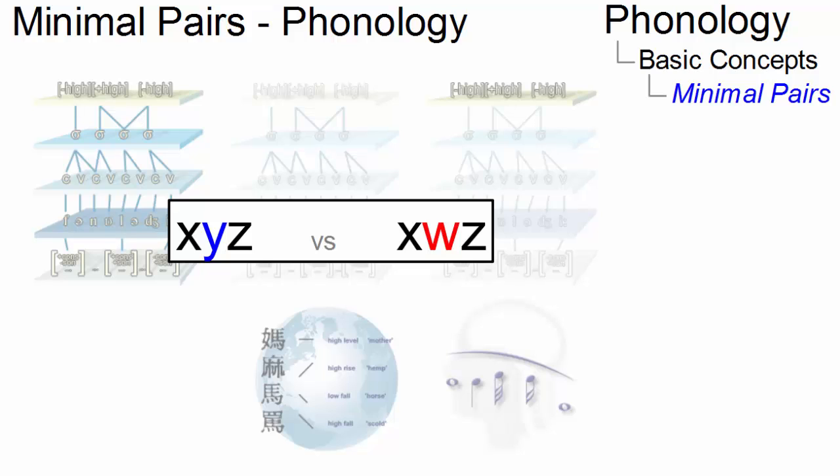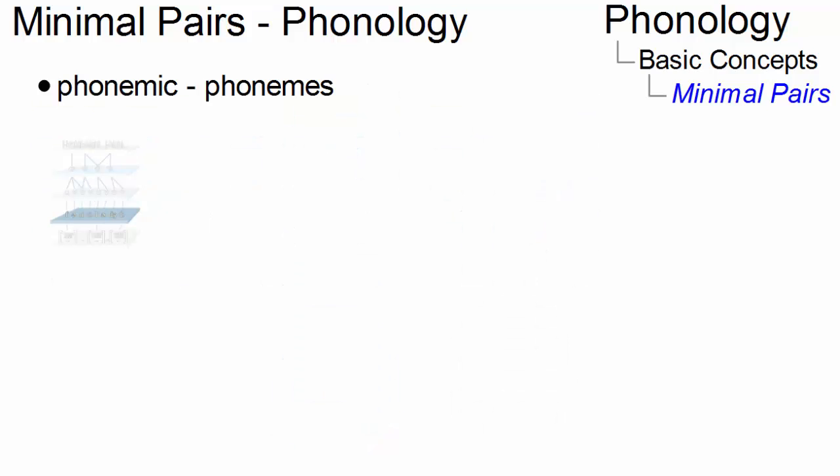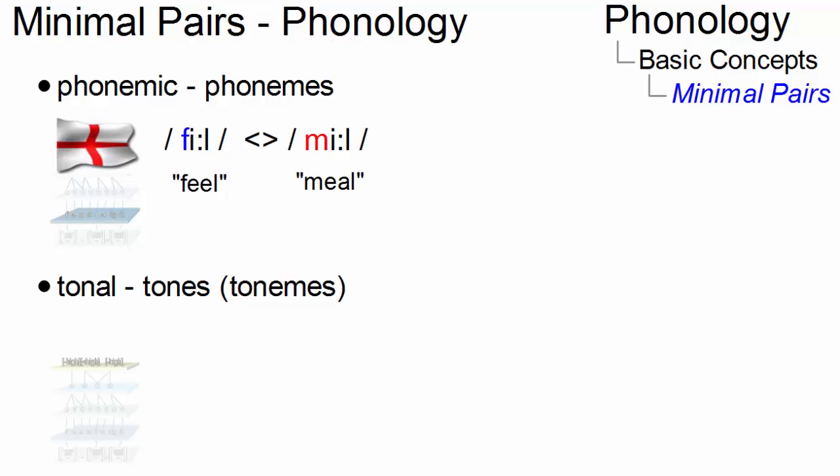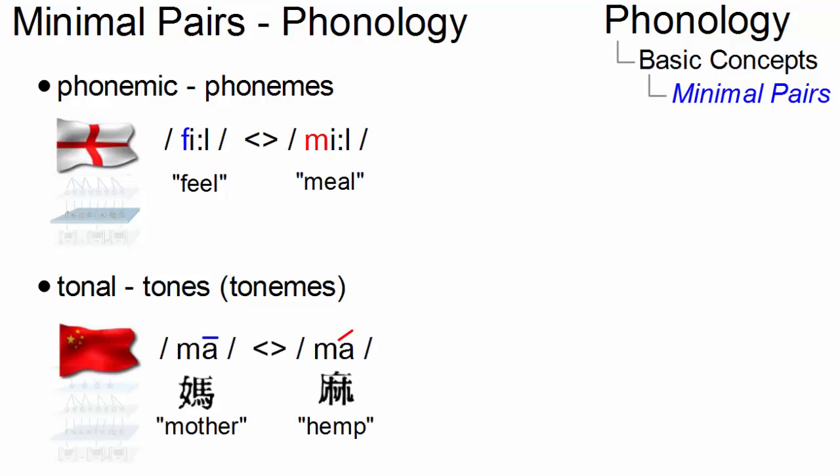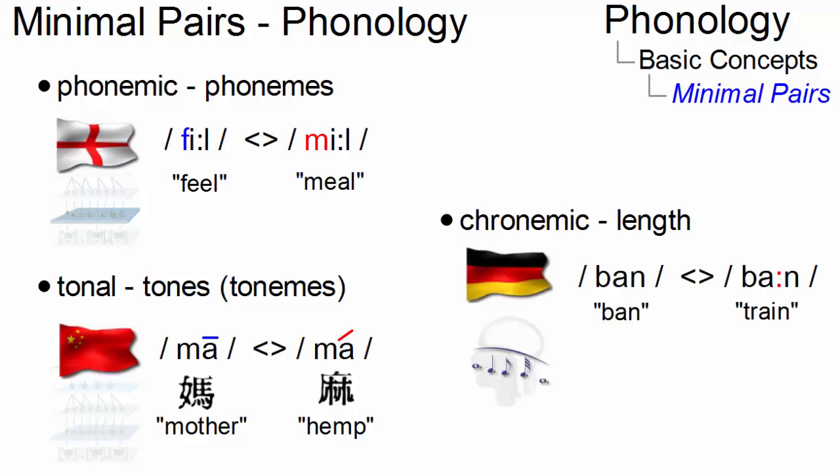The phonological elements can be different phonemes, as in present-day English feel versus meal, different tones or tonemes, as in Mandarin Chinese ma versus ma, or even different chronemic aspects, that is, length differences, as in German ban versus barn.